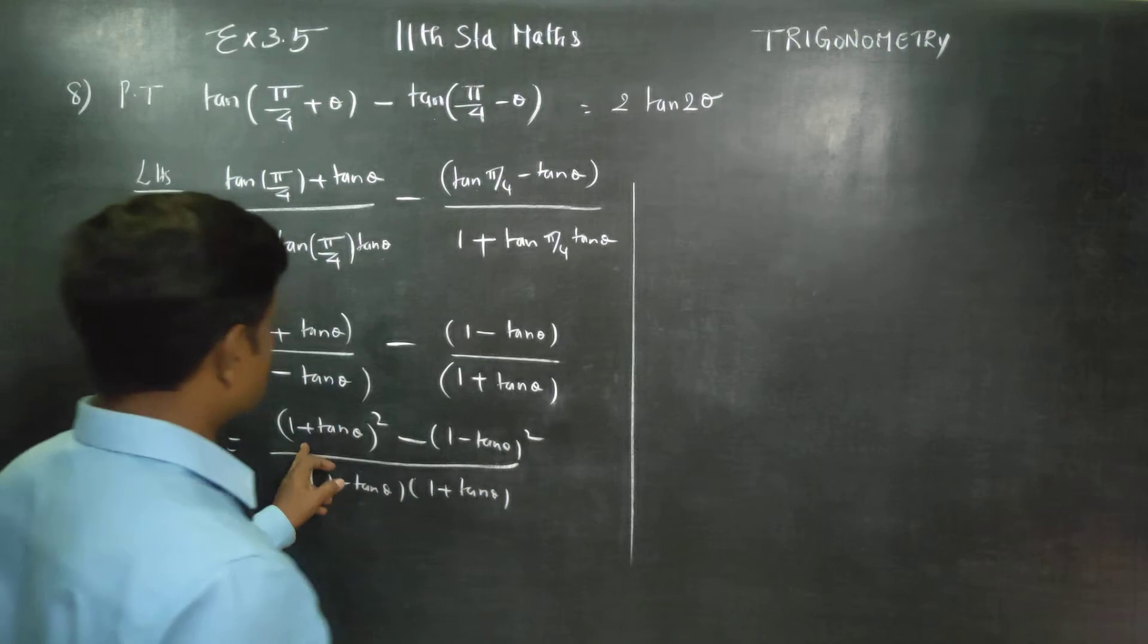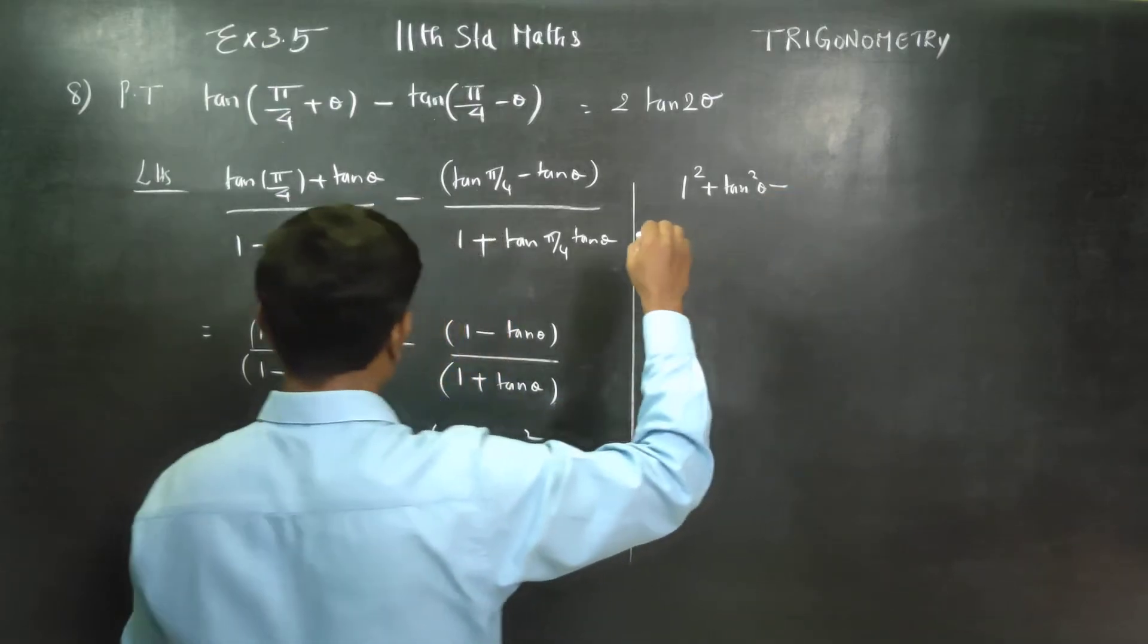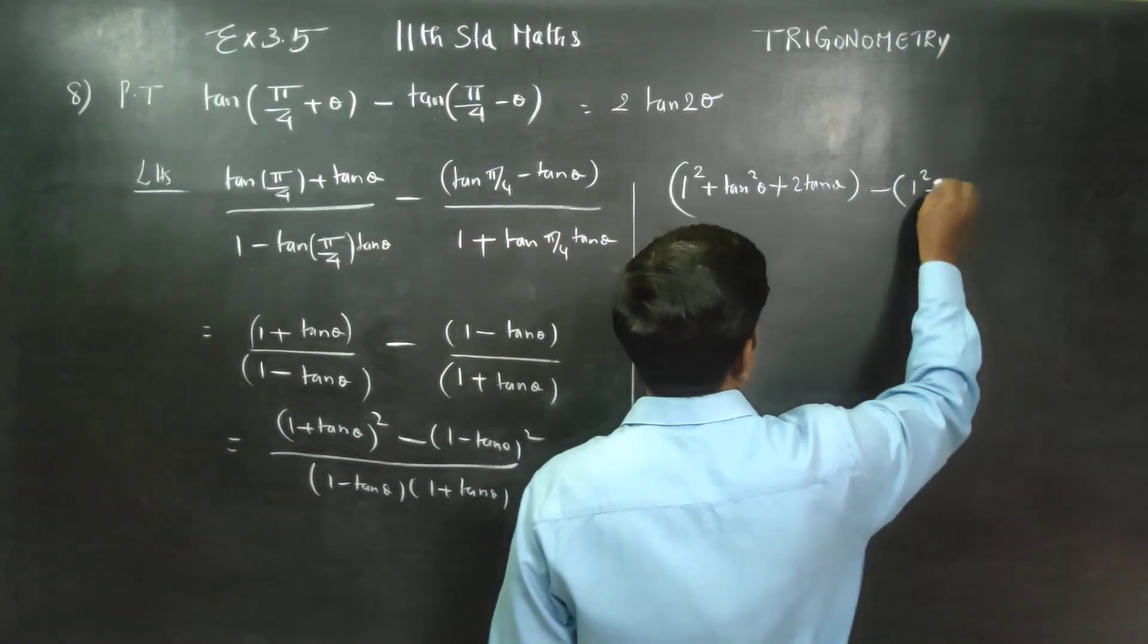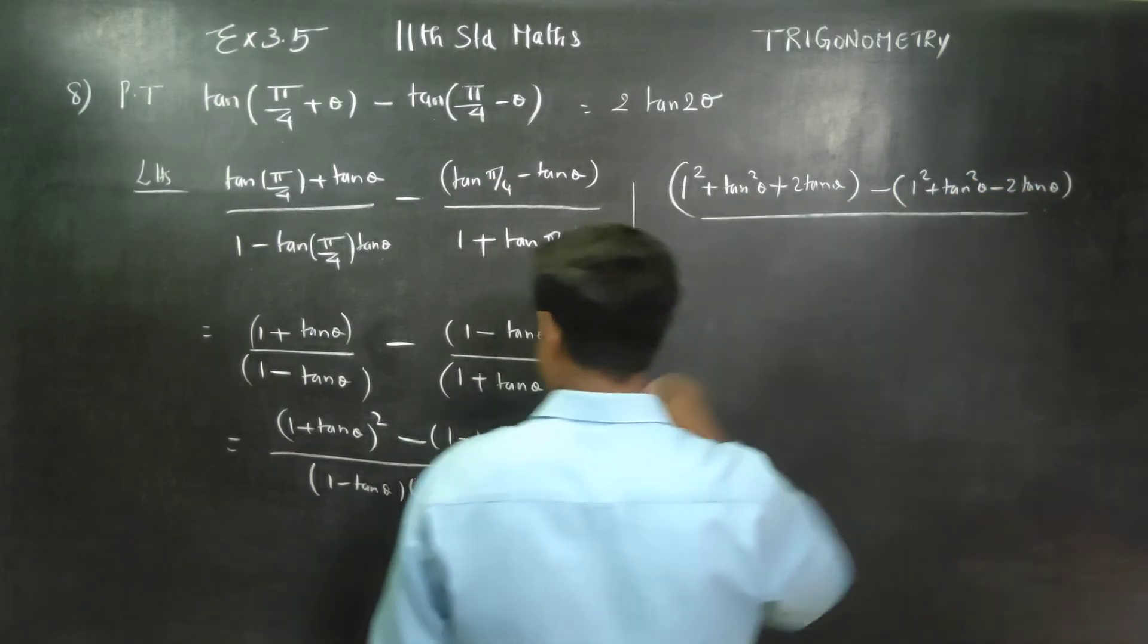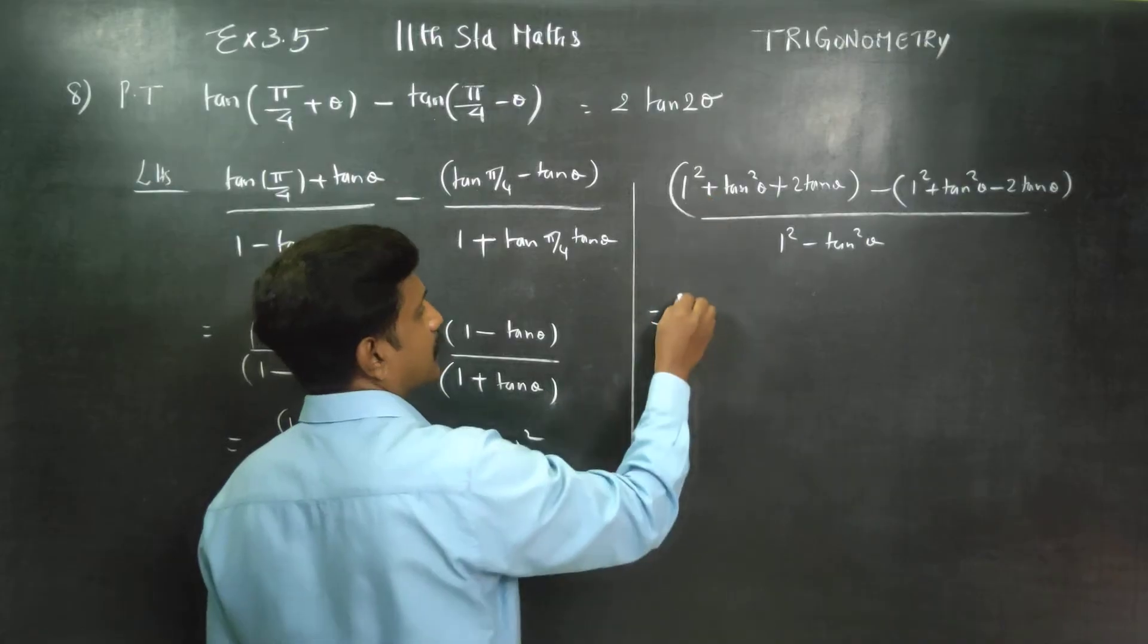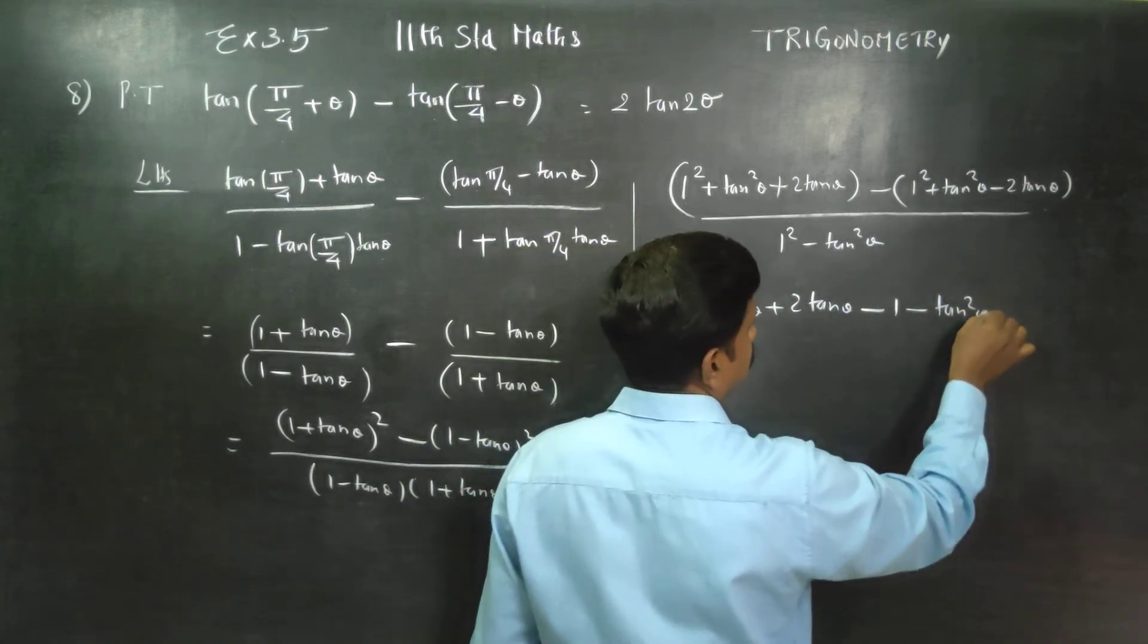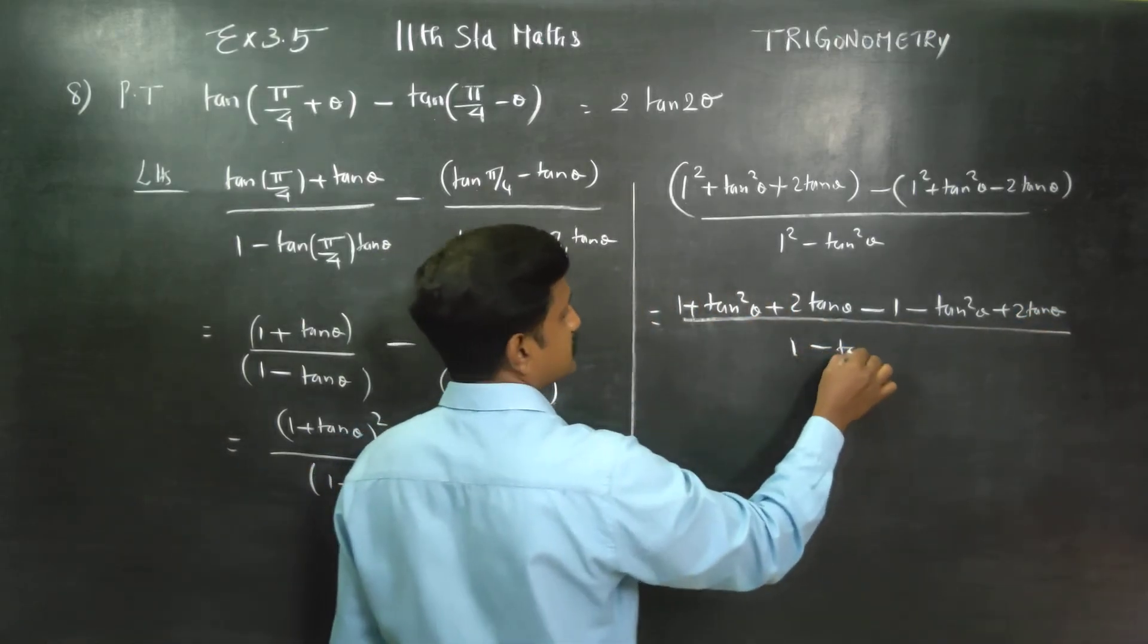Expand. A plus b whole square will be a square plus b square plus 2ab plus 2 tan theta. Minus of, this will be a minus b whole square. A square plus b square minus 2ab. All divided by, a plus b into a minus b will be a square minus b square. Bracket release. 1 plus tan square theta plus 2 tan theta. This will be minus 1 plus tan square theta, 2 tan theta by, 1 minus tan square theta.